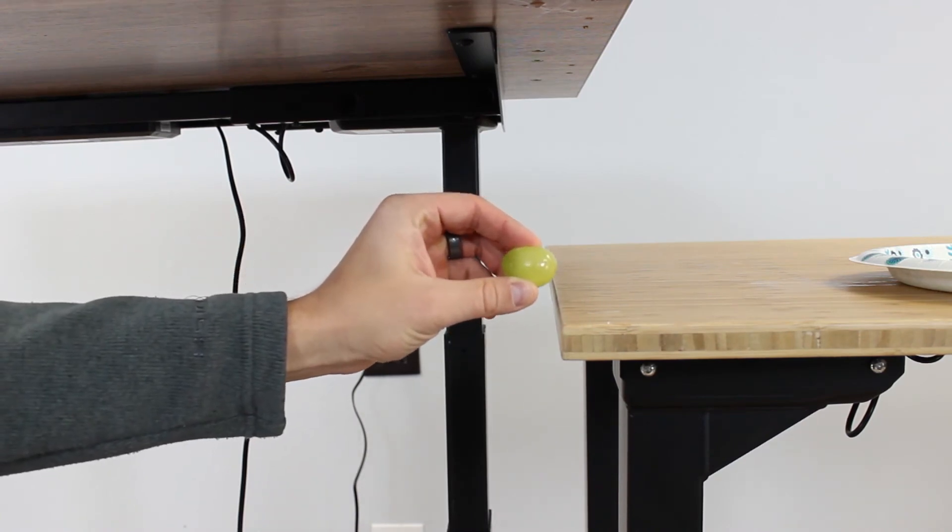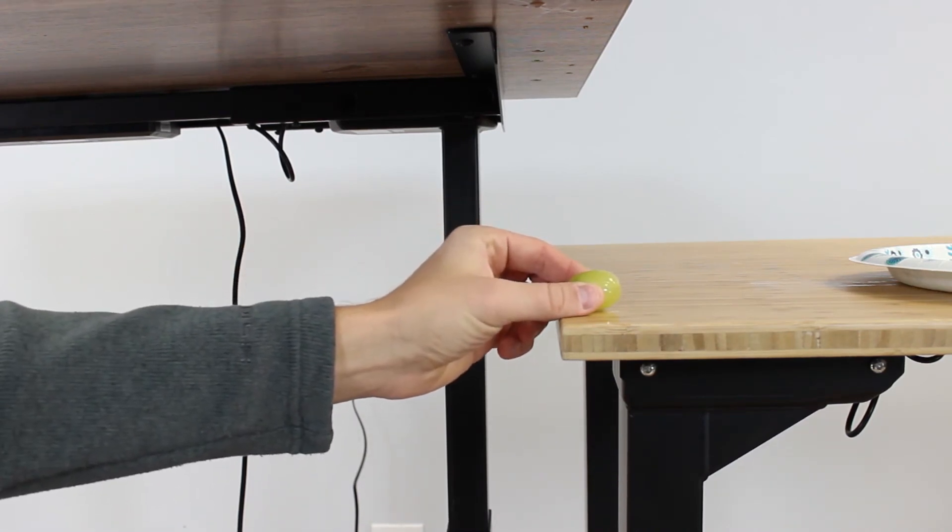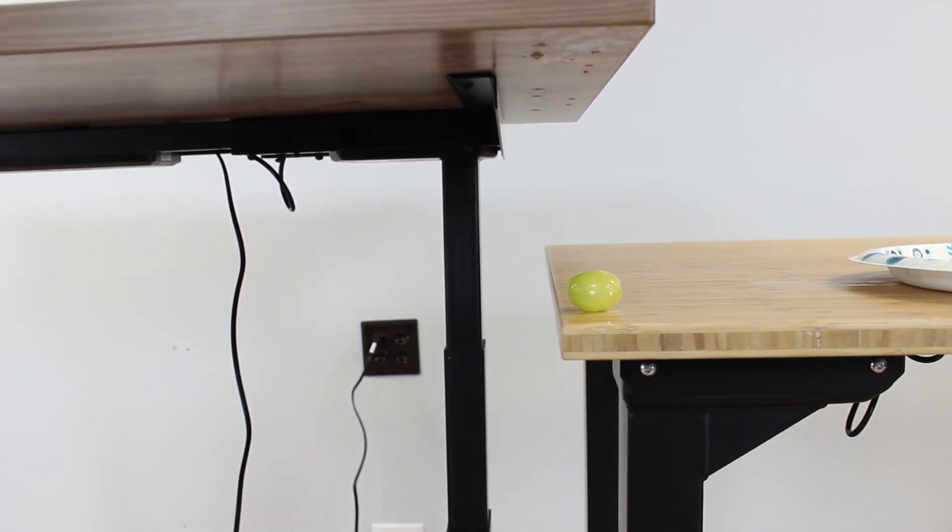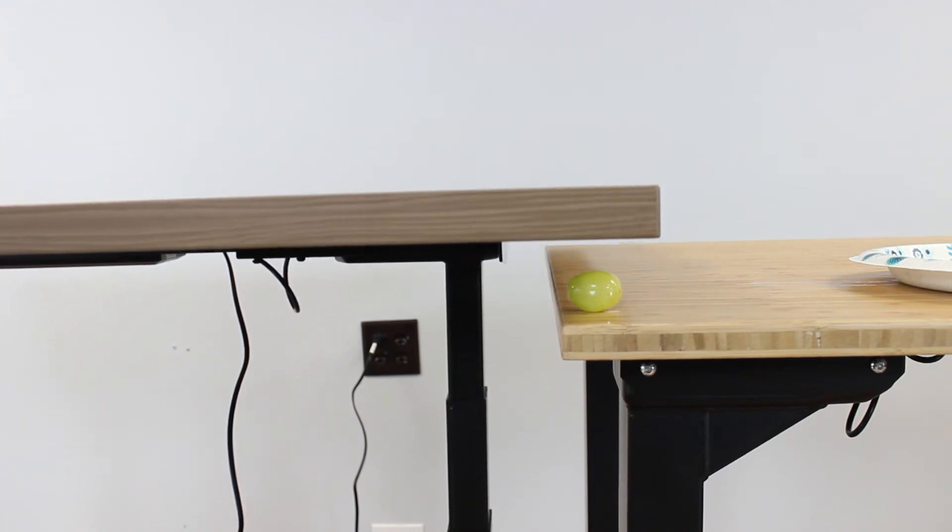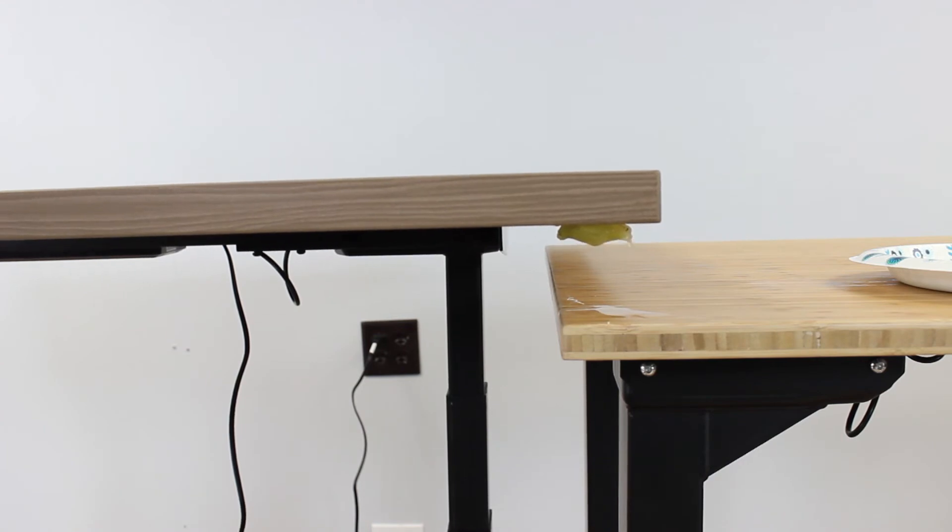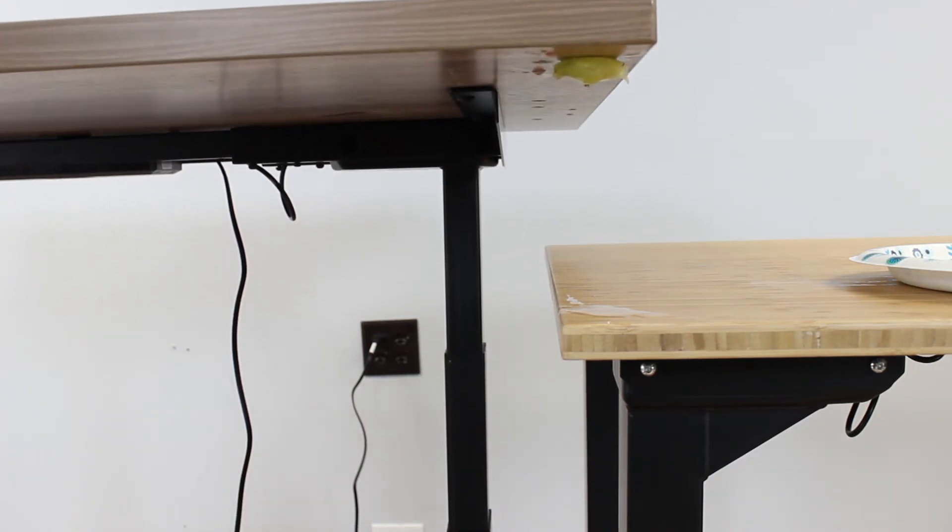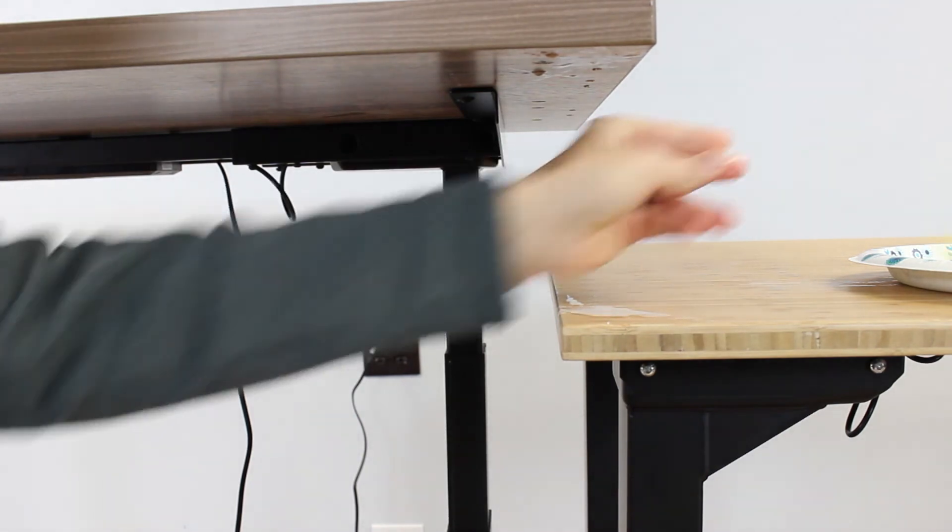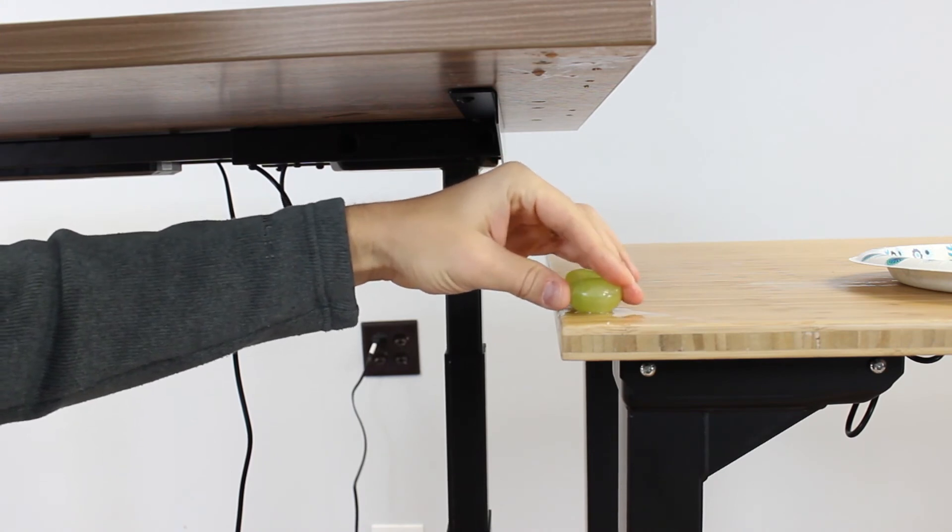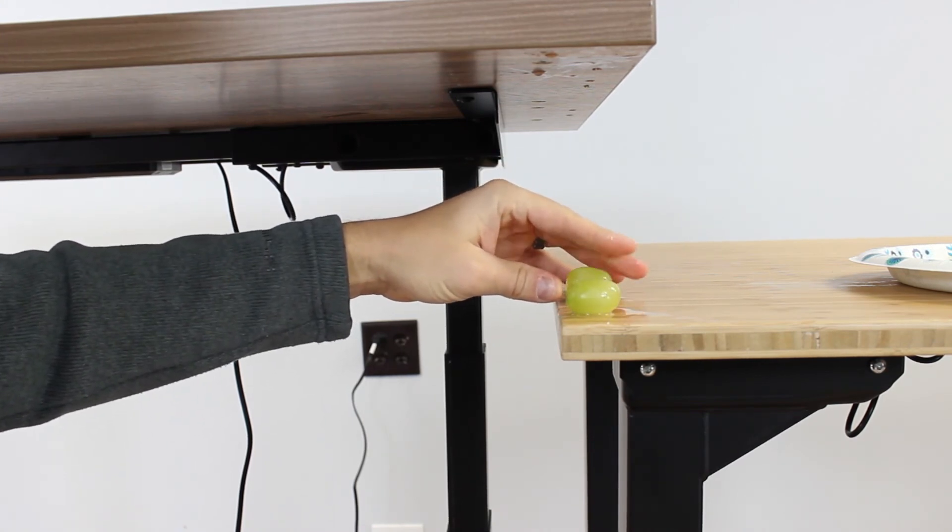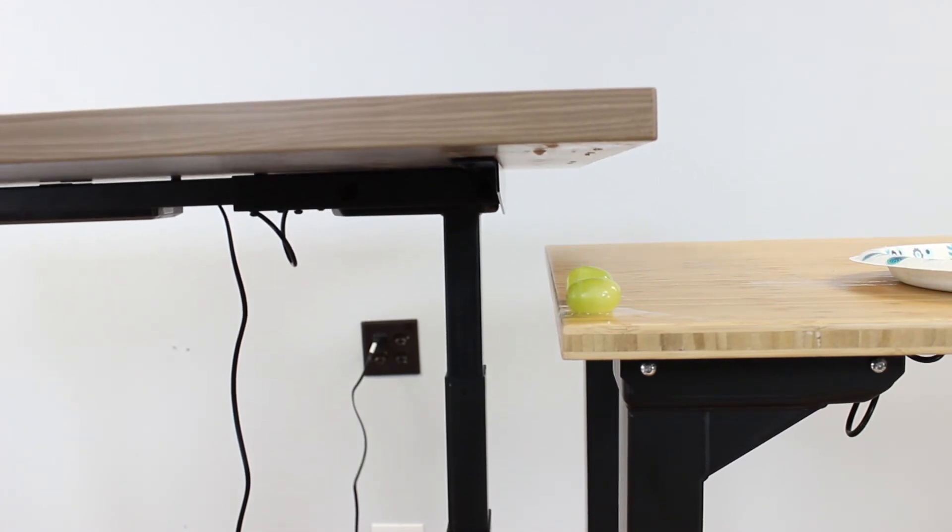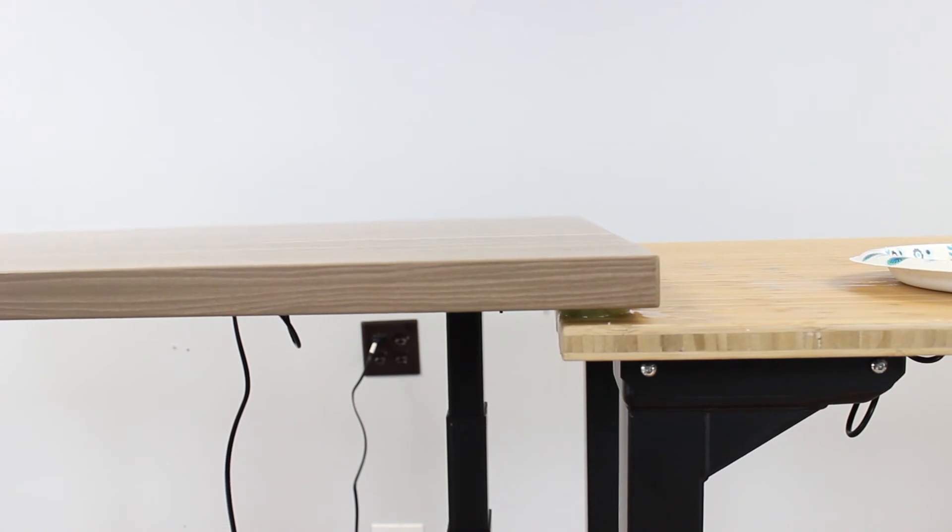So the first test that we're going to perform is a single grape. And we'll bring the Jarvis desk down and you can tell it has no problem crushing the single grape. Our second grape test will include two grapes. So we'll add both grapes now. And then we'll bring down the Jarvis table and you can see again it has no problem.